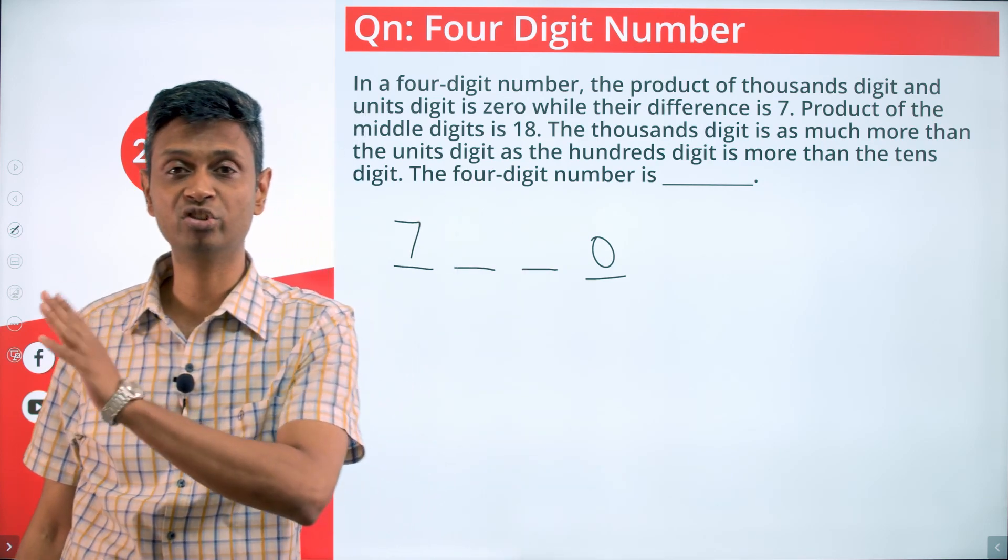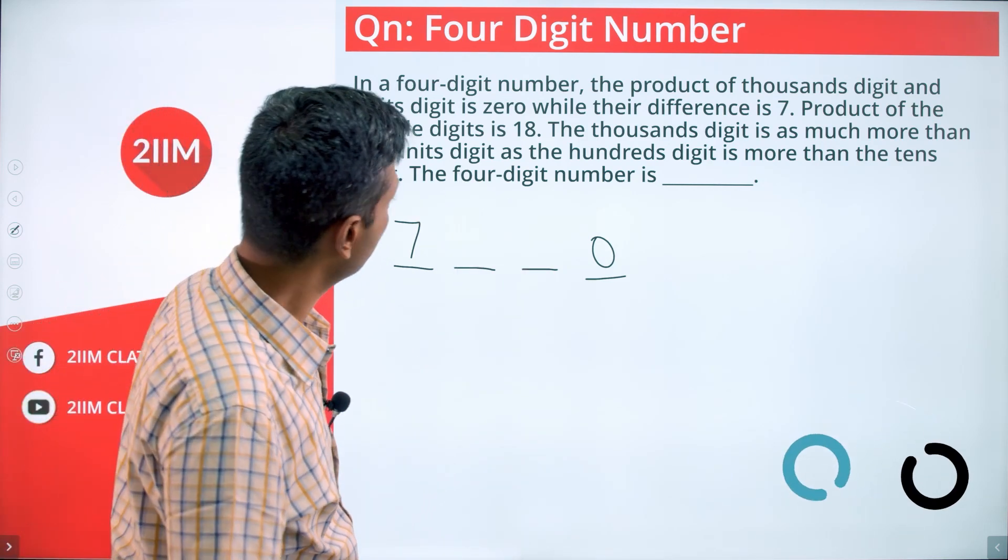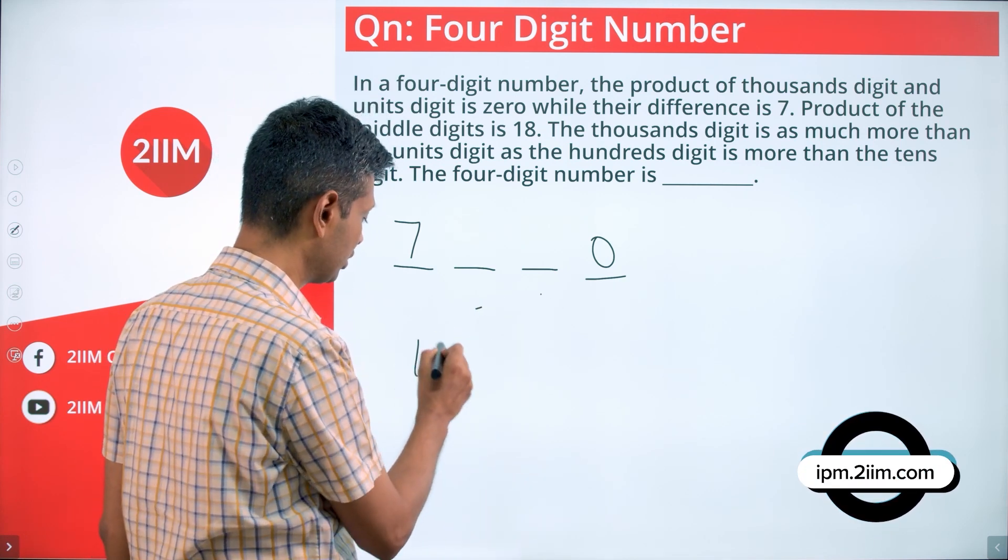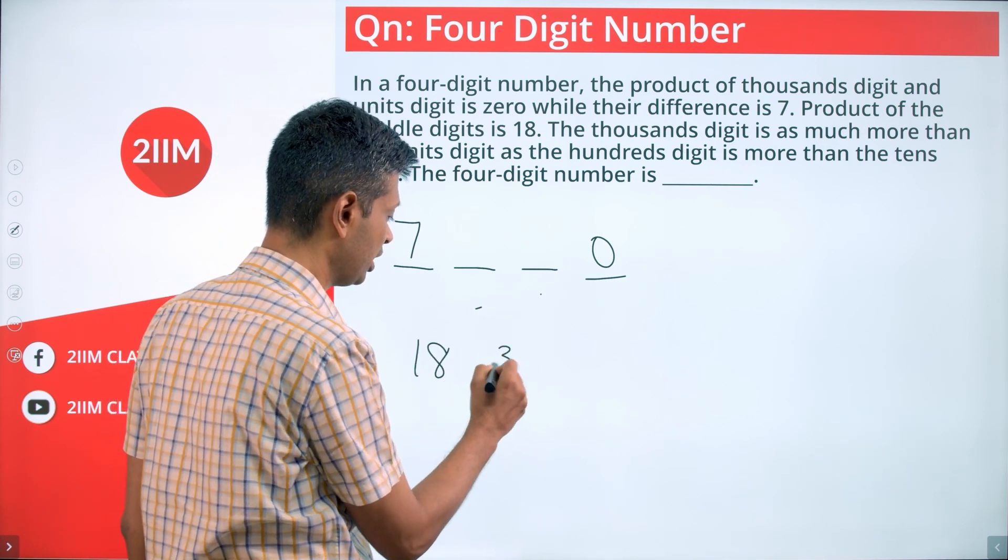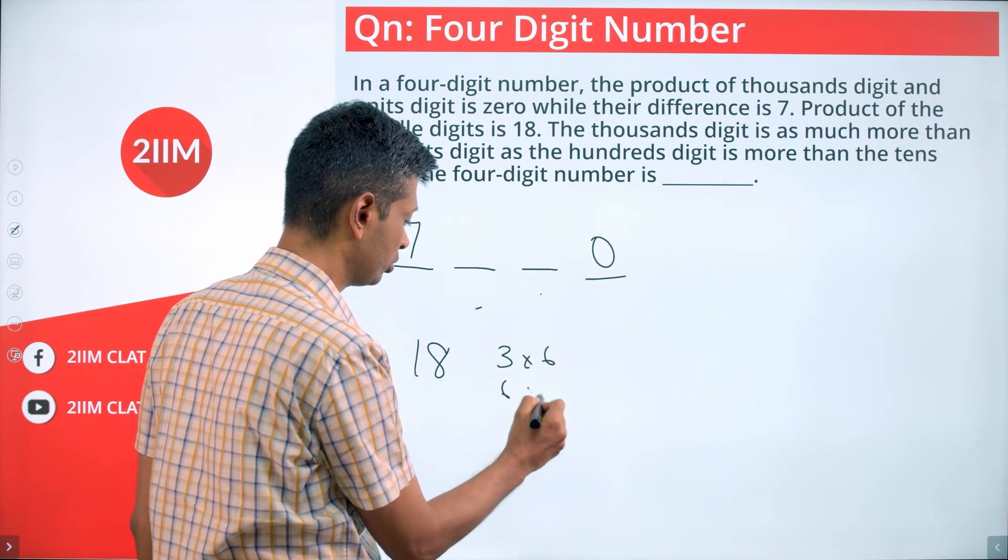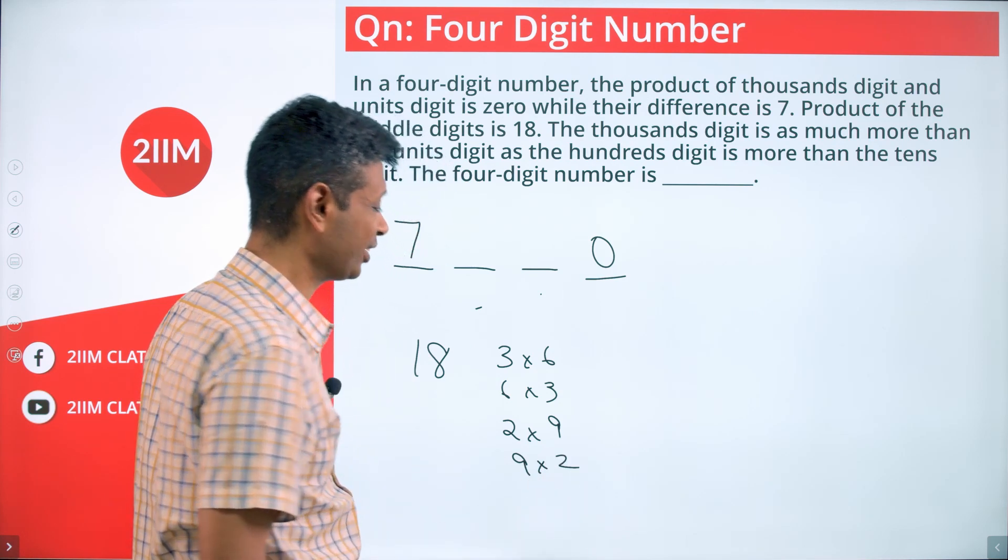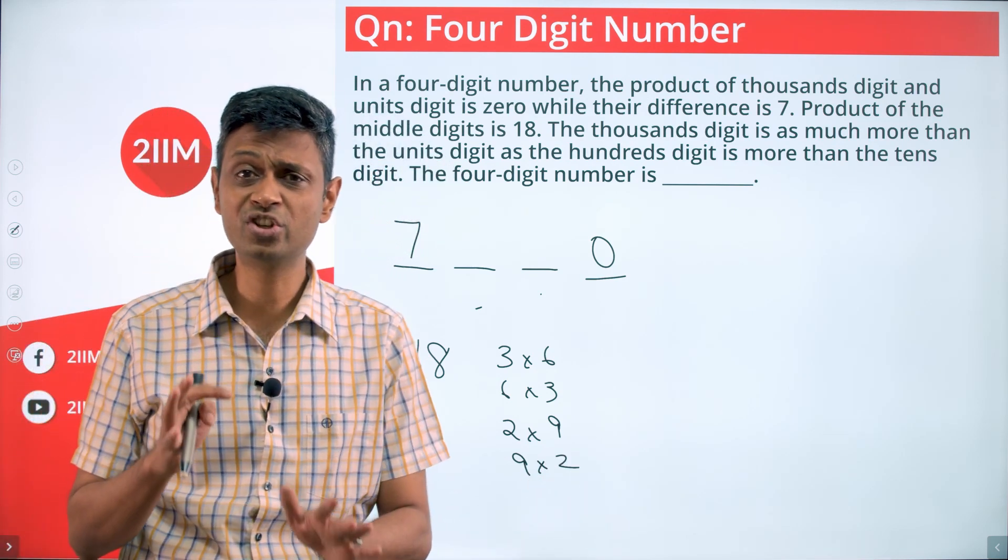Product of the middle digits is 18. These two multiply to give us 18. It could be 3 into 6, 6 into 3, 2 into 9, 9 into 2. It cannot be 18 into 1 when we're dealing with digits.